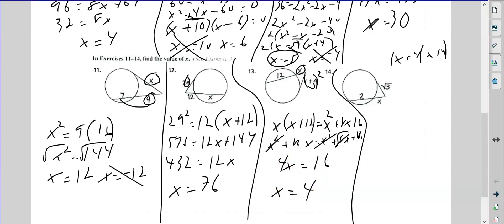Last one on this page. So again, we take this part squared. When you square a radical, it just becomes that number. Part times the whole. So that gives me x squared plus 2x equals 3. I need to move the 3 over. Now I need to factor.